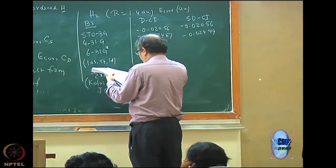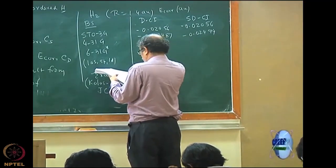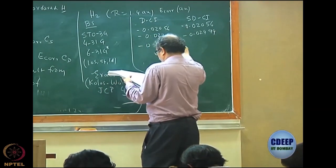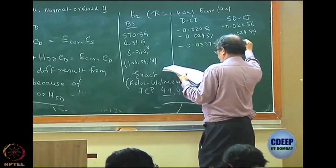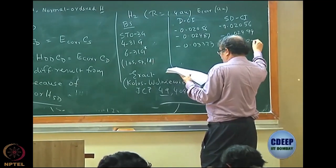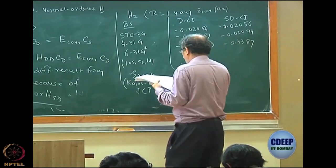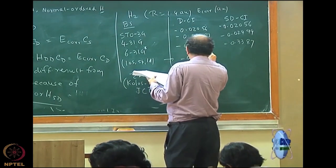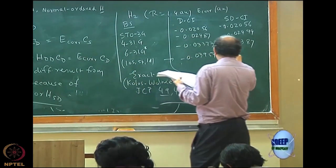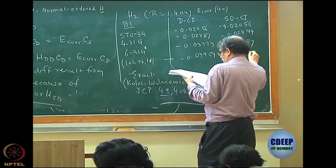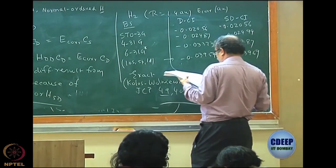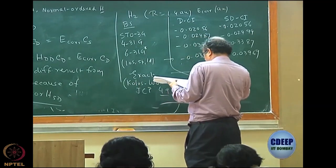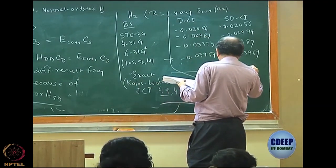At 6-31G*, DCI gives −0.03373 and SDCI gives −0.03387 — reasonably larger now. For the 10s5p1d basis, DCI gives −0.03954 and SDCI gives −0.03969. These are almost similar. And the exact result, interestingly, is −0.0409. You can see that all these CI results are still higher than the exact.